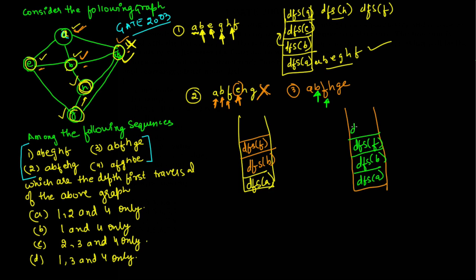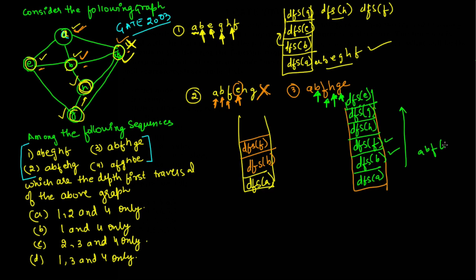We call DFS on H. The adjacent vertices of H are B, F, and G; B and F are already visited, so we must visit G. We call DFS on G. The adjacent vertices of G are E, H, and F; H and F are already visited, so we visit E. The complete sequence is A, B, F, H, G, and E — this is a valid sequence.